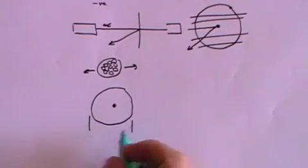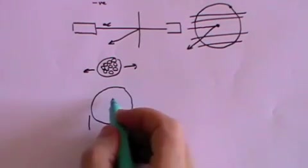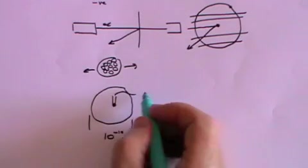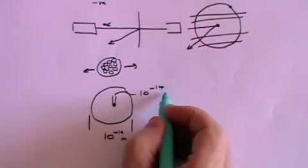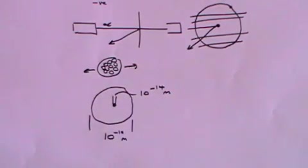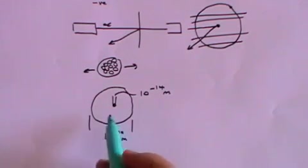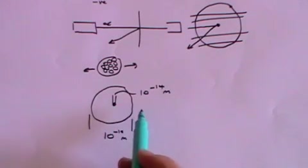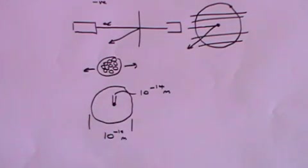An atom very roughly is 10 to the minus 10 meters across. A nucleus by contrast is 10 to the minus 14 meters across, very roughly. In other words, 10,000 times smaller than the diameter of the atom. Put it this way, if an ordinary room in your house were representing the atom, then the nucleus would be a grain of sand in the middle.